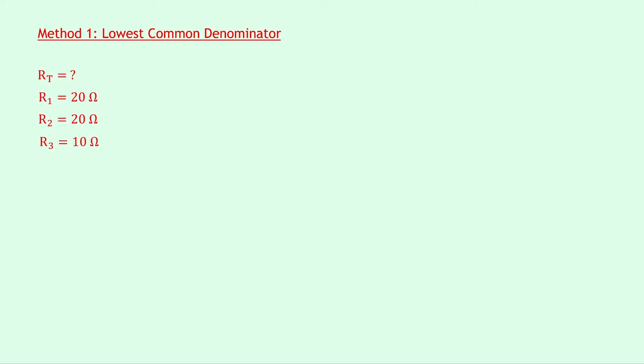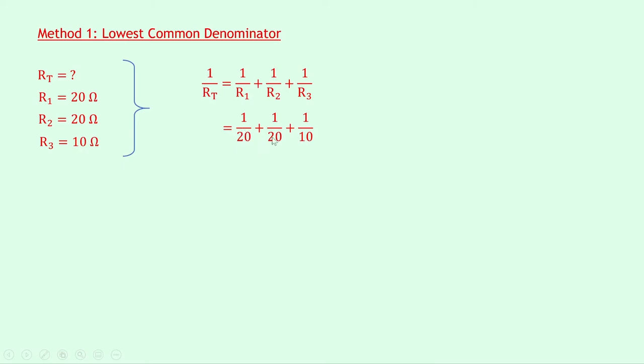The first method I'm going to show you is the lowest common denominator method, and this is one that doesn't really need a calculator unless you're using more complicated numbers. Writing down what we know from the question, we're trying to find the total resistance. Let's call R1 20 ohms, R2 20 ohms and R3 10 ohms. Our equation for resistors in parallel is 1/RT = 1/R1 + 1/R2 + 1/R3. Substituting in the numbers we get 1/20 + 1/20 + 1/10. We need to look at the denominators and find the lowest common denominator — in this case 20, since 10 goes into 20 twice.